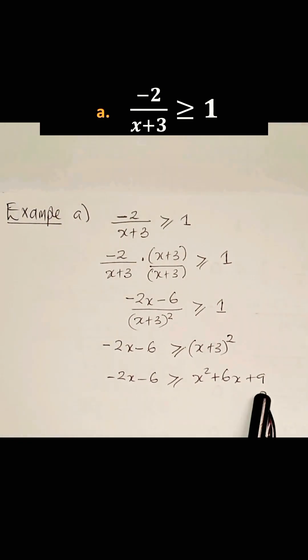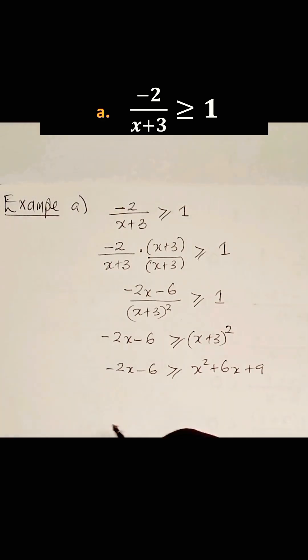We can take what we have on the right hand side to the left hand side to get -x² - 6x - 2x - 9 - 6 is greater or equal to 0.